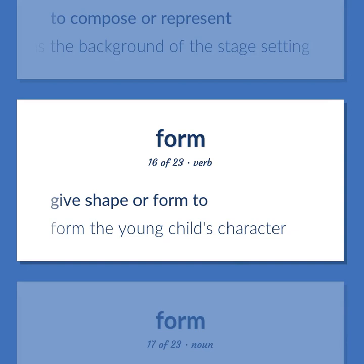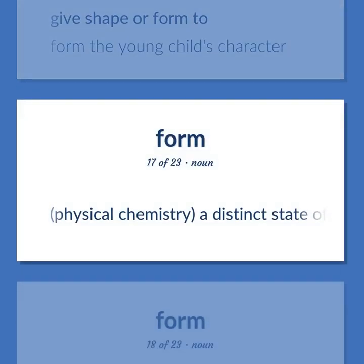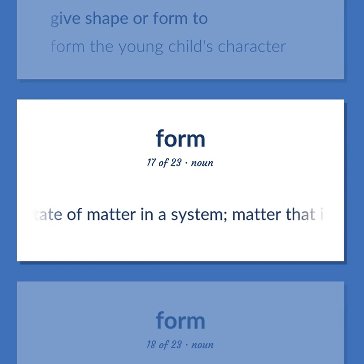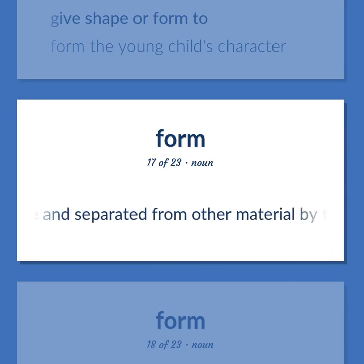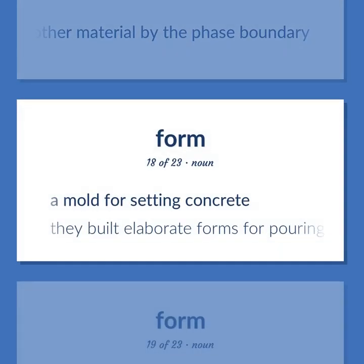Form the young child's character. Physical chemistry: a distinct state of matter in a system — matter that is identical in chemical composition and physical state and separated from other material by the phase boundary. A mold for setting concrete. They built elaborate forms for pouring the foundation.